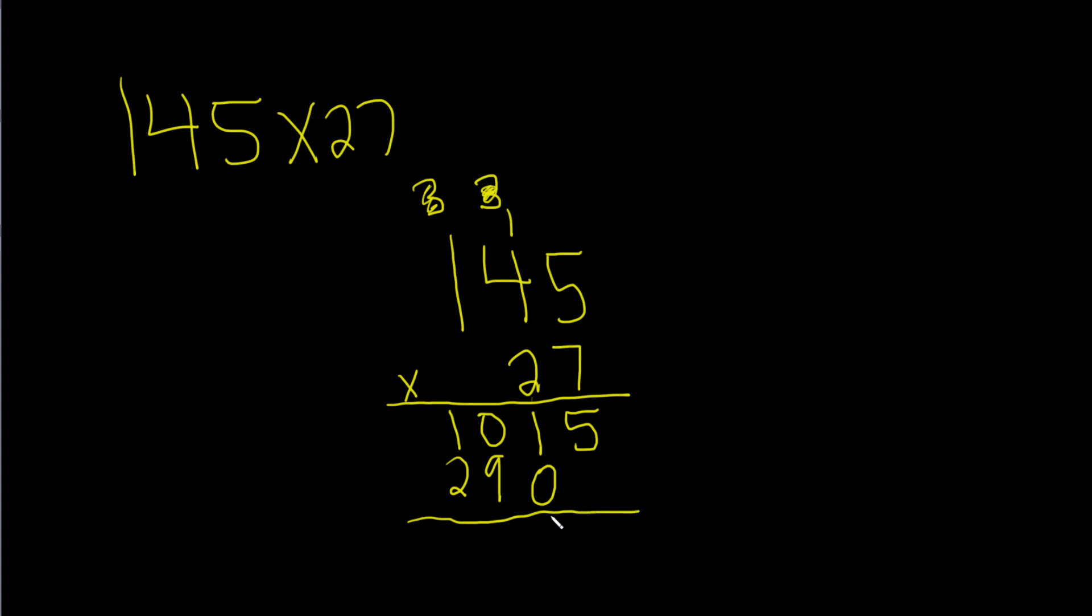You write this down with a plus sign. There's a number missing here, so you put a 0. Then you add: 5 plus 0 is 5, 1 plus 0 is 1, 0 plus 9 is 9, 1 plus 2 is 3. That would be the final answer. I hope this video has been helpful.